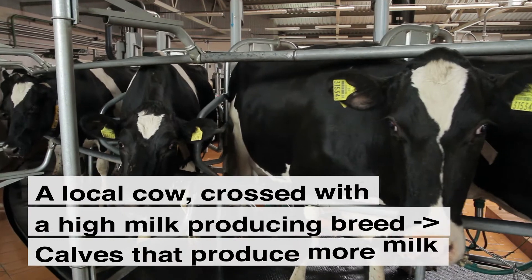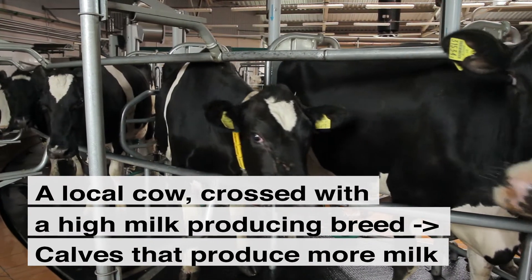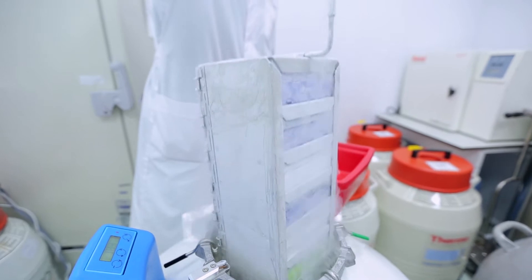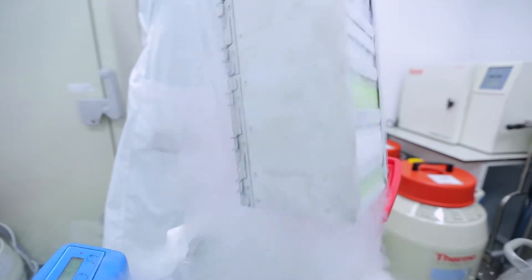Artificial insemination is used around the world to make cows produce more milk. Artificial insemination straws have to be kept cryogenically cold.